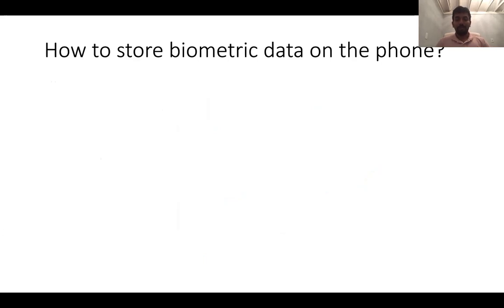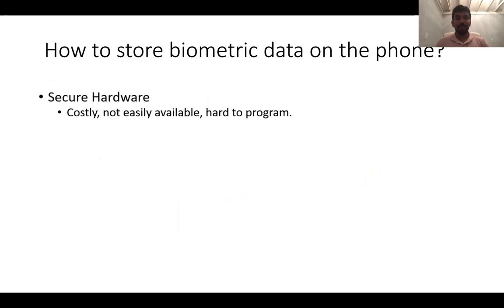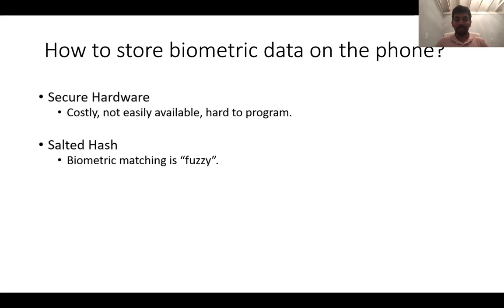Now, if you think about how the user can store the biometric data on the phone, there are a few options. One is maybe there's secure hardware, but this is costly or not easily available. Another option, similar to the case of passwords, could be to store a salted hash of the biometric. One concern here is that the biometric matching process, unlike passwords, is fuzzy — whereas in the case of passwords it's an exact equality test — so a salted hash might not be quite compatible with biometric matching. And of course, there is also the issue of an offline attack that an adversary who manages to capture the phone can launch.